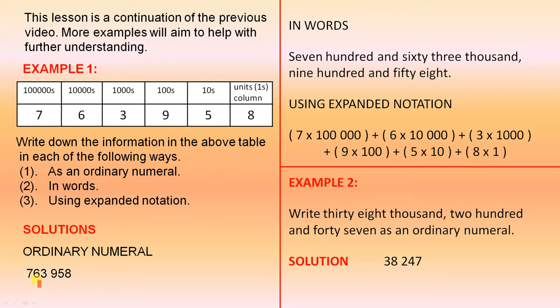Here is the ordinary numeral. We just check that we have each of the digits in the correct order: 763958. That is correct.